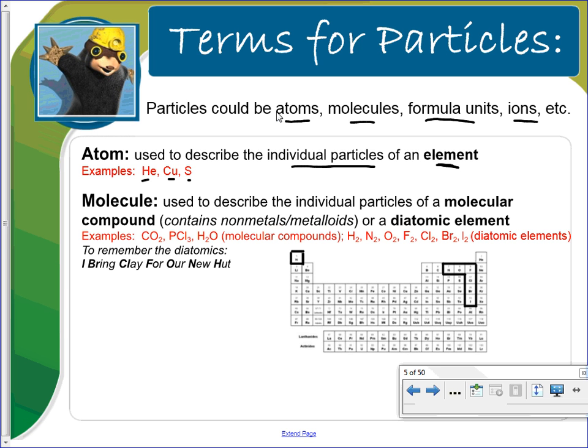A molecule is used to describe the particles of a molecular compound. It can only contain a non-metal metaloid. Or it could be a diatomic element. So examples of molecules would be carbon dioxide, phosphorus trichloride, water, those are molecular compounds. But these elements here never are by themselves. So they always pair up with one another.